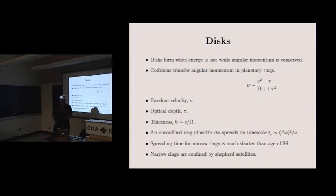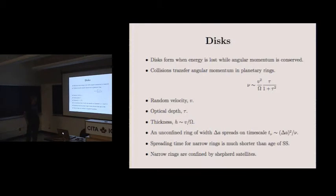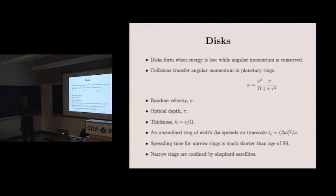I just want to say a few things about the dynamics of rings. Particle collisions transfer momentum and there are some random velocities. The random velocities are more or less equal to the orbital angular velocity times the radius of the biggest particle. With the other particle being a meter across and the orbital angular velocity being 10 to the minus 4 radians per second, you get random velocities on the order of a millimeter per second and thicknesses like a meter.